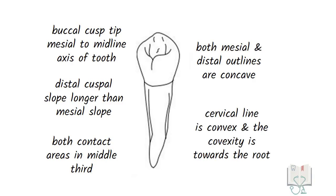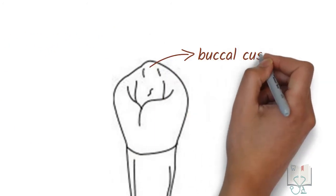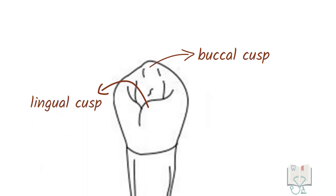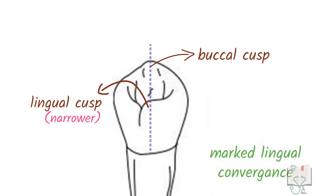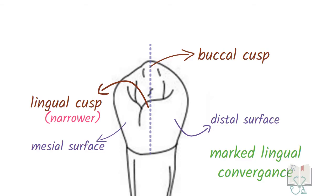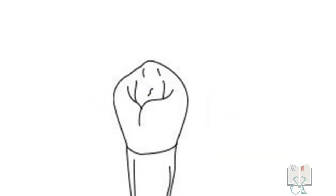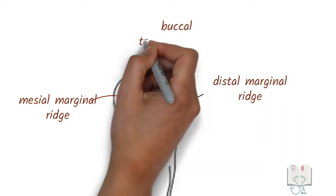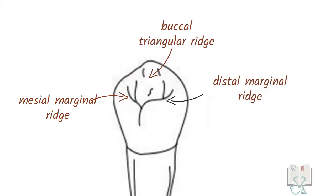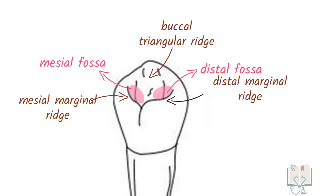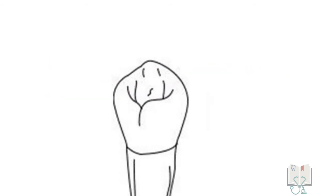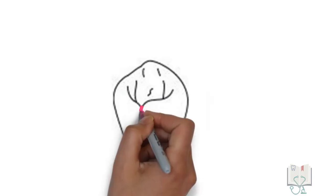From the lingual aspect, all the outline features seen from the buccal aspect are also seen. Additionally, both the buccal cusp and lingual cusp are visible. The lingual cusp tip is in line with the buccal cusp tip. The lingual cusp is much narrower than the buccal cusp, causing a marked lingual convergence, due to which both mesial and distal surfaces are visible. The lingual cusp is much smaller than the buccal cusp, so most occlusal landmarks such as the mesial marginal ridge, distal marginal ridge, and buccal triangular ridge are visible, along with the mesial and distal fossae.